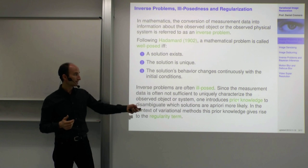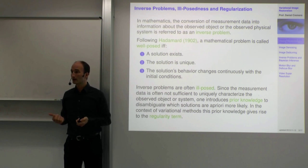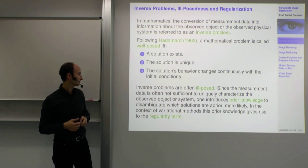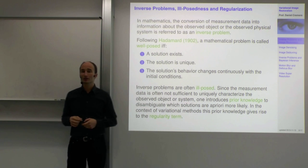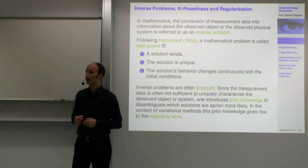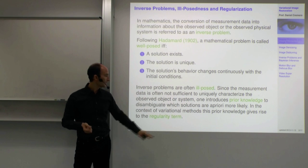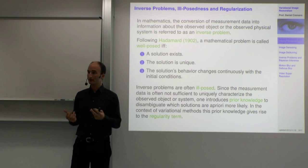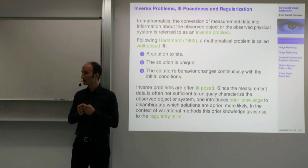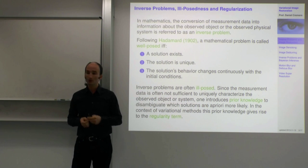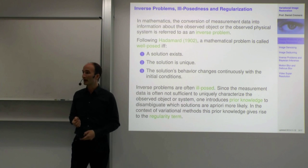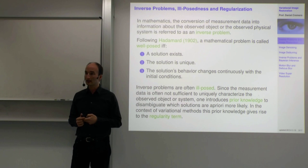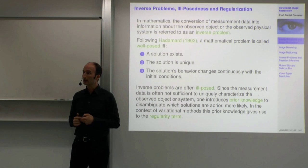If the observations don't tell me which is the right solution, do I have some prior knowledge that helps me disambiguate? To say: among the many possible solutions, which one is the best — which one is, in a statistical setting, a priori most likely? In variational methods, this prior knowledge is what gives rise to the regularity term. In denoising, we said a priori we favor solutions that are spatially smooth, and we measure that smoothness in the regularity term.